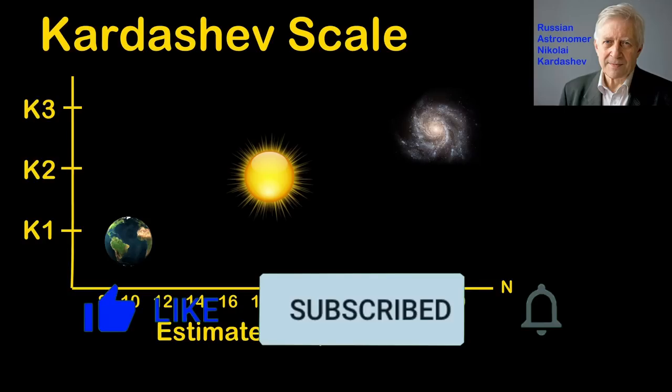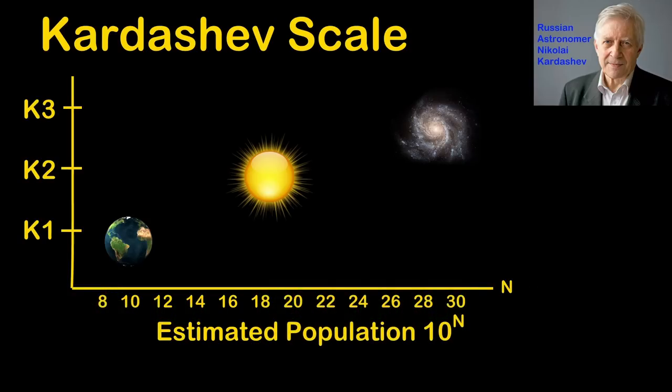The Kardashev scale's originator, astronomer Nikolai Kardashev, suggested it as a classification for advanced civilizations based on how much power they'd consume. The scale is on astronomical grades: planetary, solar, and galactic. It has come to also imply a civilization's technological level, but honestly, it's not really good for measuring that.